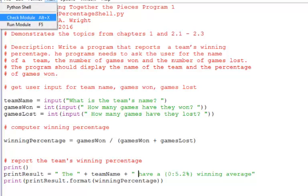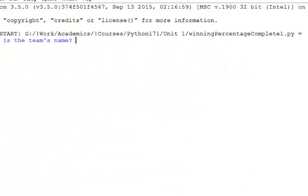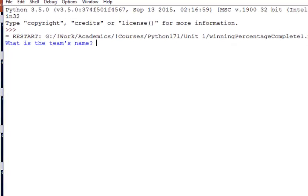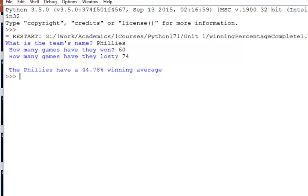Save it and run it again. So the input prompt asks for the team's name, and I've grown up a Phillies fan. But this part of it is going to pain me a bit. They've won 60 games, but they've lost 74 games. The output tells us that the Phillies have a 44.78% winning average. Not a good year for the Phillies.